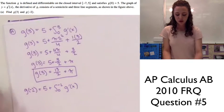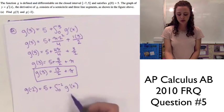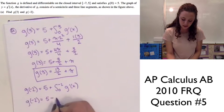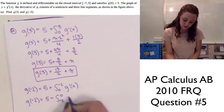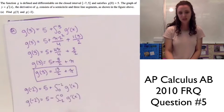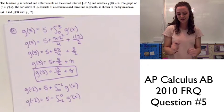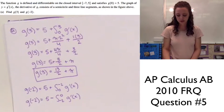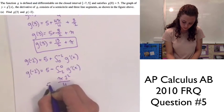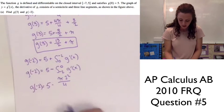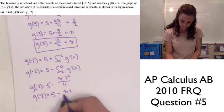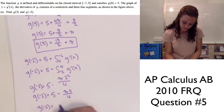Since the integral goes from 0 to negative 2, we fix this by taking the negative: 5 minus the integral from negative 2 to 0 of g prime of x. The area under this curve is a quarter circle with the same area as before, giving pi times 2 squared over 4. Our final answer is g of negative 2 equals 5 minus pi.